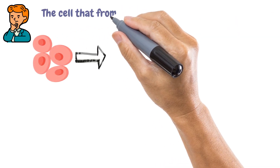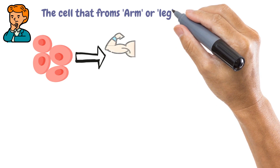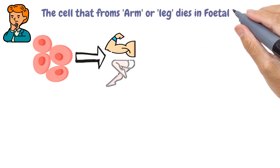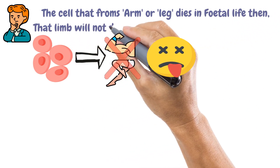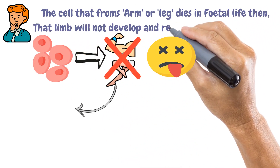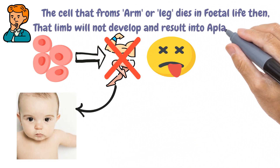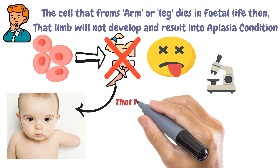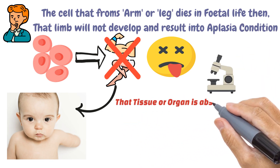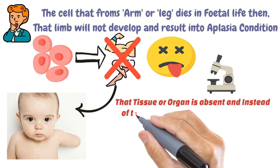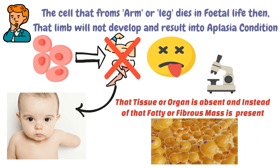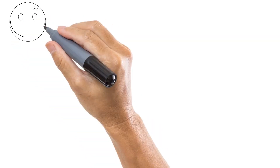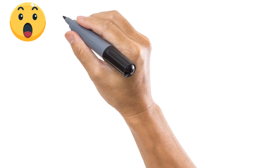This Aplasia condition occurs in the embryo or fetus during intrauterine development. For example, if the cells that form an arm or leg die during fetal life, that limb will not develop, resulting in Aplasia. Microscopically, the tissue or organ is absent and instead a fatty or fibrous mass is present.